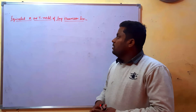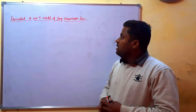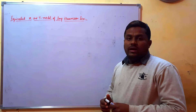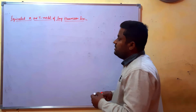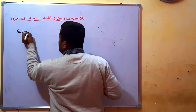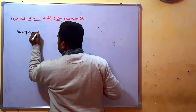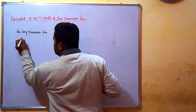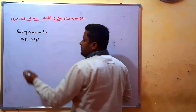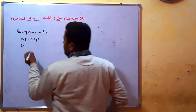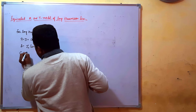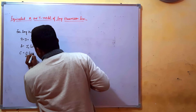In this video we will represent the pi and T model for long transmission line. As we know, for long transmission line the ABCD constants can be written as: A is equal to D is equal to cosh(γL), B is equal to Z₀ sinh(γL), and C is equal to (1/Z₀) sinh(γL).